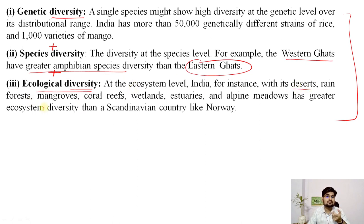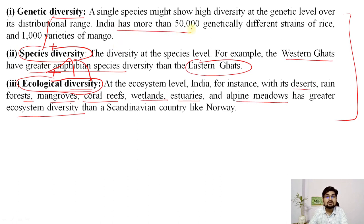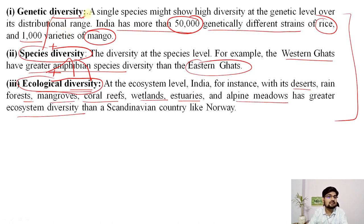Ecosystems like desert, rainforest, mangroves, coral reefs, wetlands, estuaries, and alpine meadows have greater ecosystem diversity values. One ecological diversity area will have several species, and one species will have several genetic variants. For example, India has more than 50,000 genetically different strains of rice and 1,000 varieties of mango. Together, from the genetic level to the ecosystem level, this makes up biodiversity.